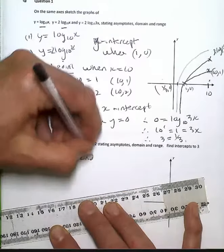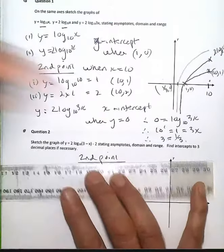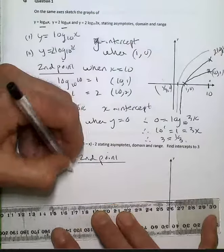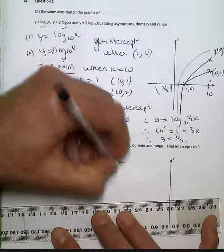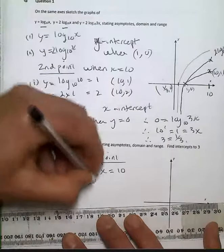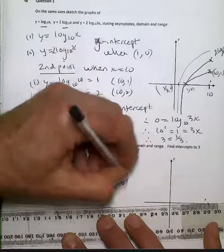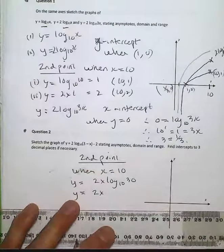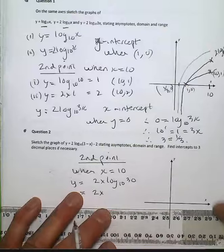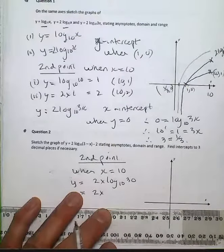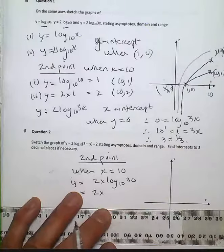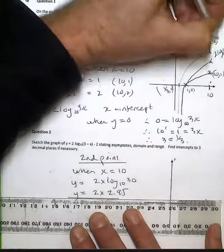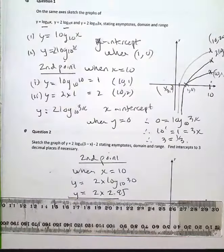A second point, to choose a second point, I may as well choose the value of 10. So when x is equal to 10, y is equal to 2 times log of 30, I'm doing this on a separate calculator. So 2 times log of 30, I end up with 2.95. So that 10, 2.95, will be the order of the day.